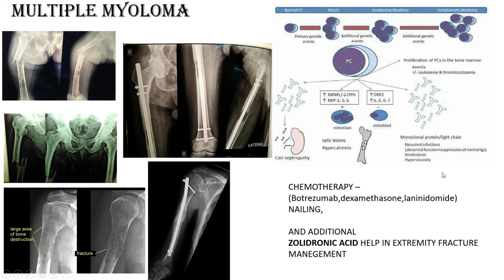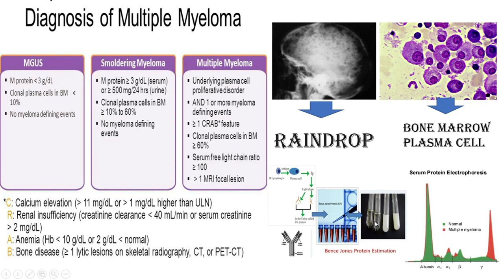Some patients can go for melphalan therapy or bone marrow transplantation. In general, we continue this treatment for lifelong. Along with treating bony osteolysis, we can use additional zoledronic acid, which is extremely helpful for extremity fracture management and helps to get rid of this type of osteolysis. Multiple myeloma is a very important topic both for undergraduates and postgraduates. The diagnostic criteria use the CRAB criteria.